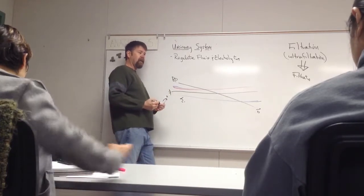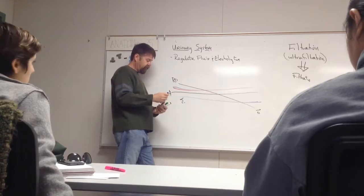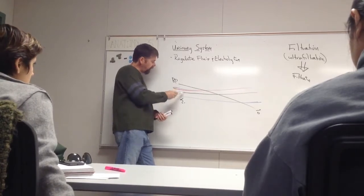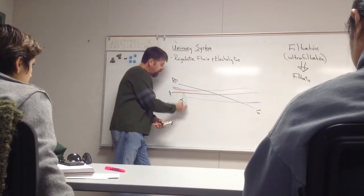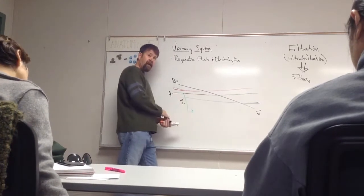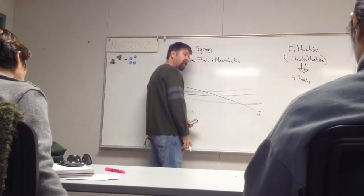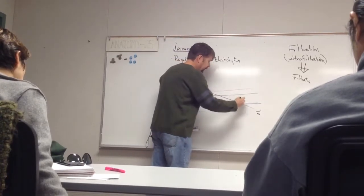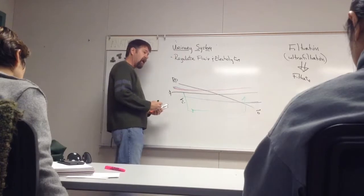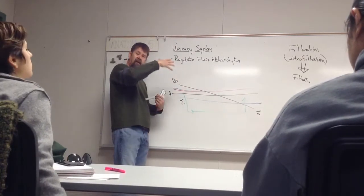At the arterial end of the capillary bed, blood pressure was higher than osmotic pressure, so filtrate got pushed out. At the venule end of the capillary bed, osmotic pressure was greater than blood pressure, so filtrate got pulled back in.